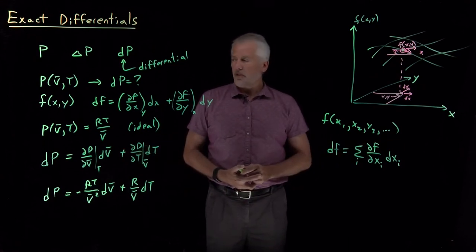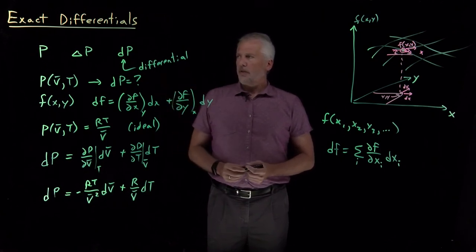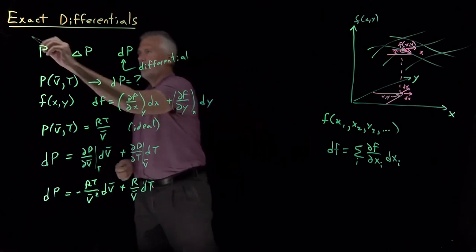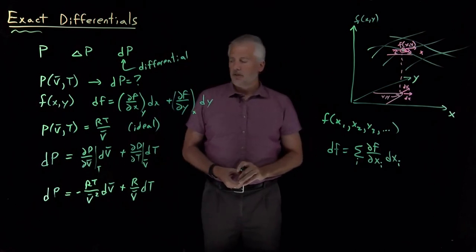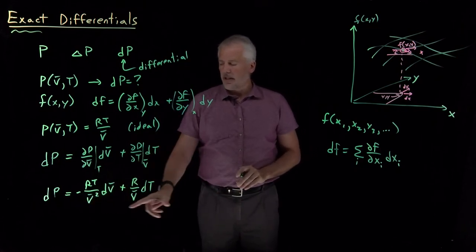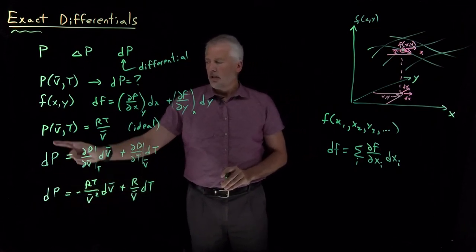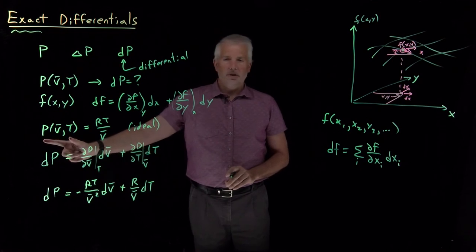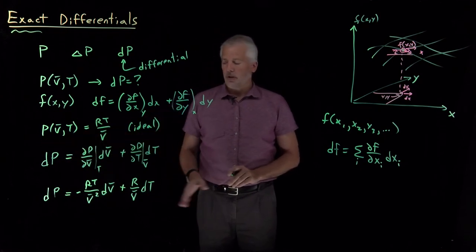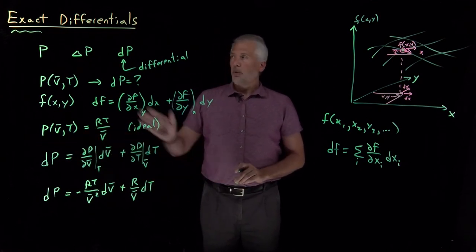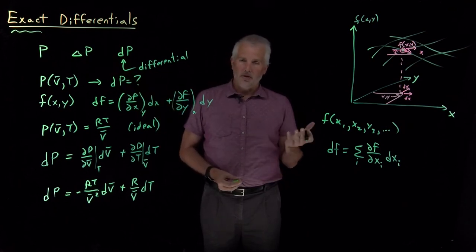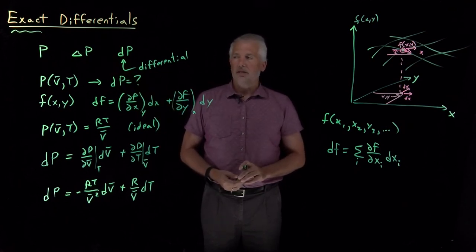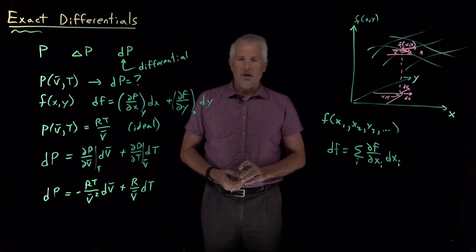We can do this not only for two-dimensional functions, but also for three, four, or five-dimensional functions as needed. This quantity we've been discussing — the differential of some function we can write an equation for — is called an exact differential. We wouldn't bother calling them exact differentials unless there were another case, and that's what we'll talk about in the next video: cases where the differentials are not exact.